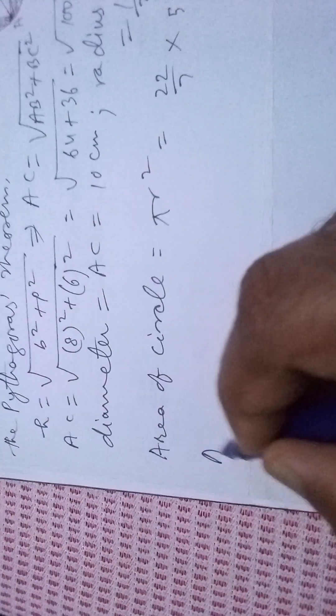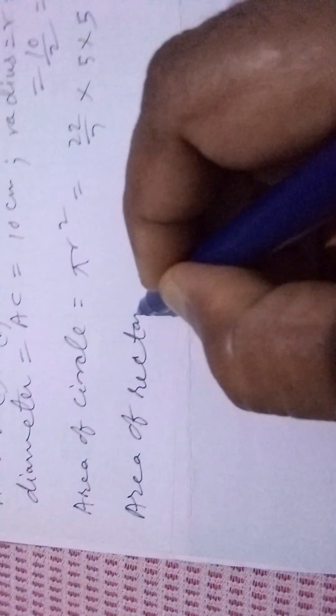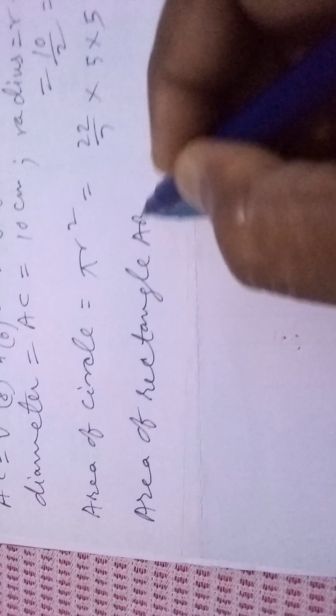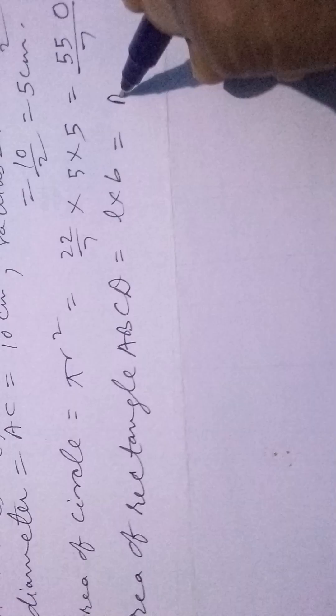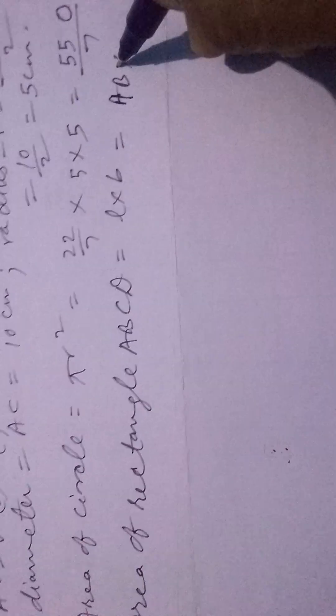Now, we are finding area of rectangle ABCD. That is length into breadth, that is AB into BC.